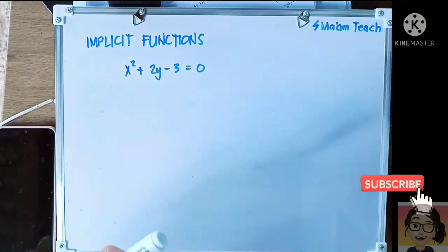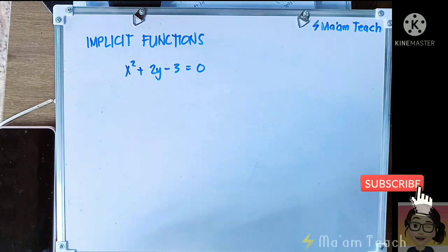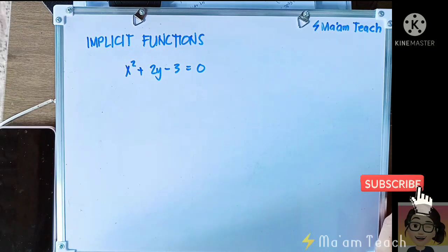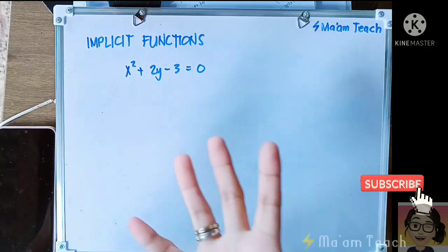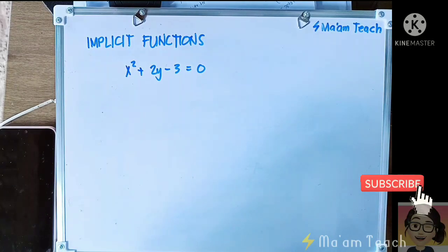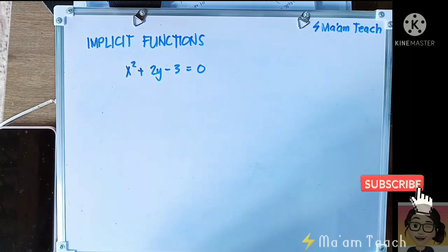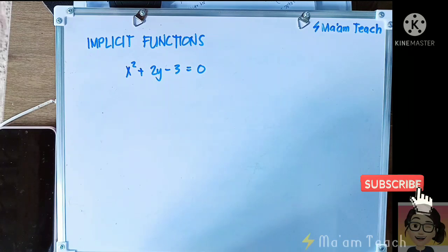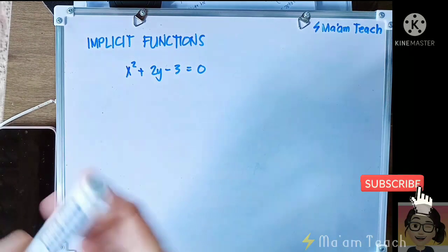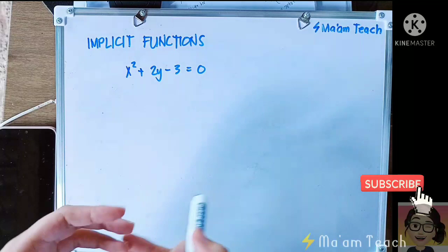Okay class, so we are now on the implicit functions. We are on page 11 already. So what do we mean class by implicit functions? Implicit functions class are those functions that are defined in more than two variables.